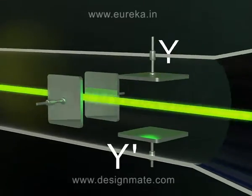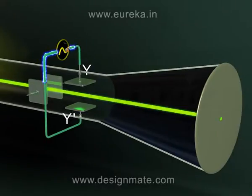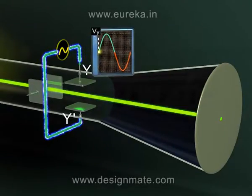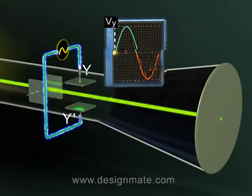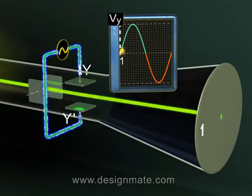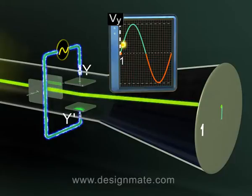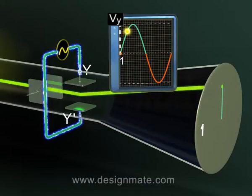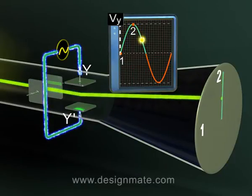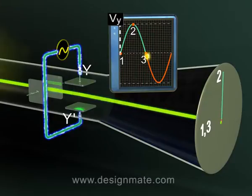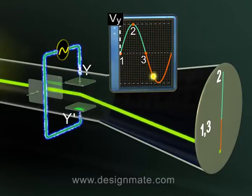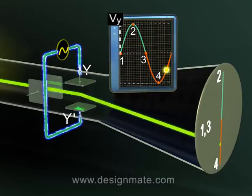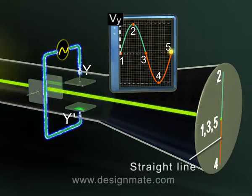Deflecting System: There are two sets of deflecting plates. When a potential difference is applied to Y-Y' plates, it deflects the beam in the vertical plane. As a result, the spotlight moves vertically up and down in response to the applied voltage, and it traces out a straight line on the screen.